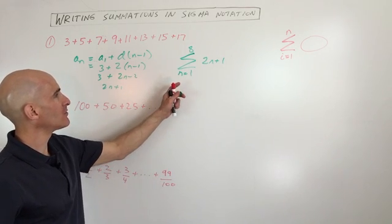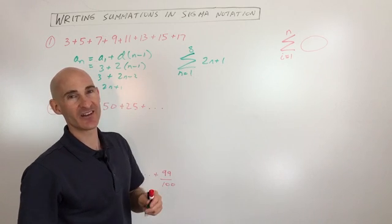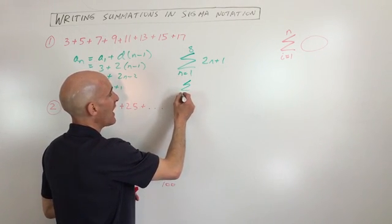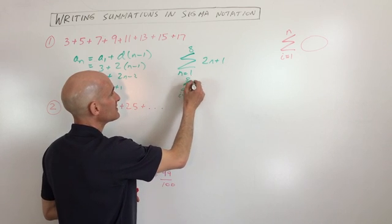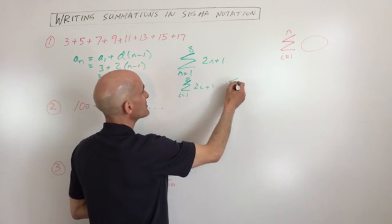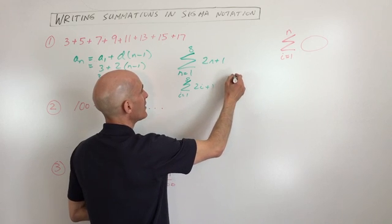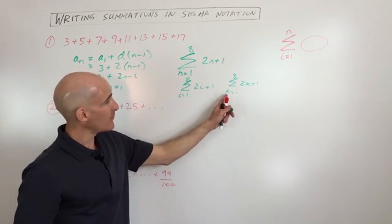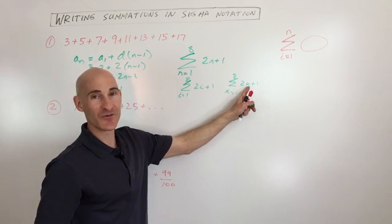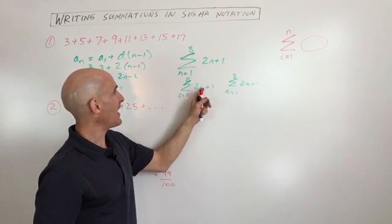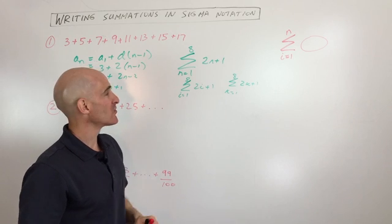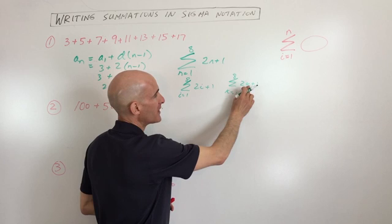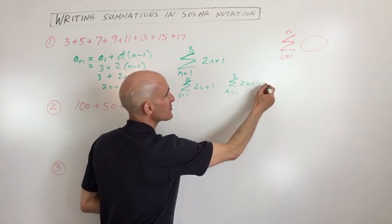Now you're probably saying, well, why are you using the letter n? Well, you can use any letter you want. You could rewrite this as i equals one to eight of two i plus one. You could say k equals one to eight of two k plus one. But notice that whatever variable I'm using here, I'm using here. So i, i, n, n, and so on. So that I know, and when somebody looks at this, they know that I start with one, I put one in, two times one is two plus one is three.